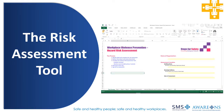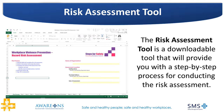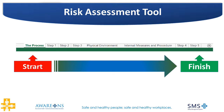Now that we have an understanding of what we may need to consider when conducting a risk assessment, let's start to take a look at how we can apply the Awareness Violence in the Workplace risk assessment tool. The risk assessment tool is an interactive spreadsheet that will provide you with a step-by-step process for conducting the risk assessment. Each step includes instructions on the different strategies that can be applied in order to complete the assessment. When you have completed all the steps, the results of the assessment will identify possible gaps in already existing controls or where additional controls may need to be added.